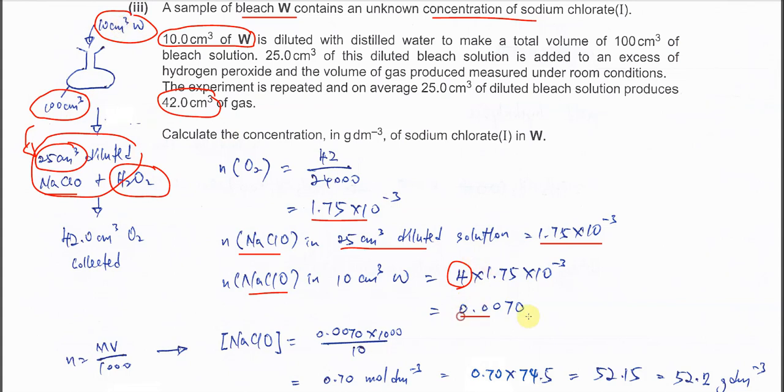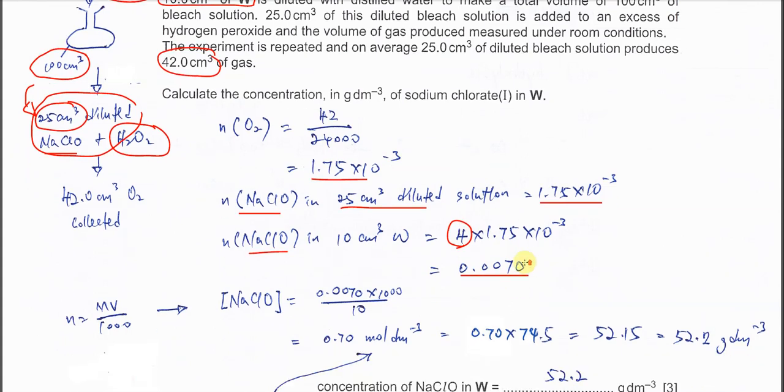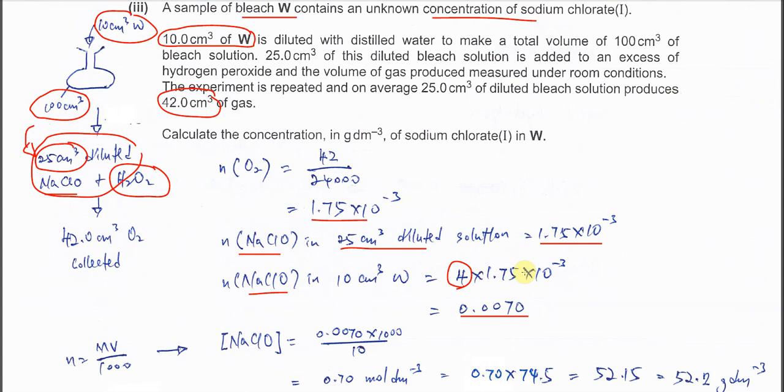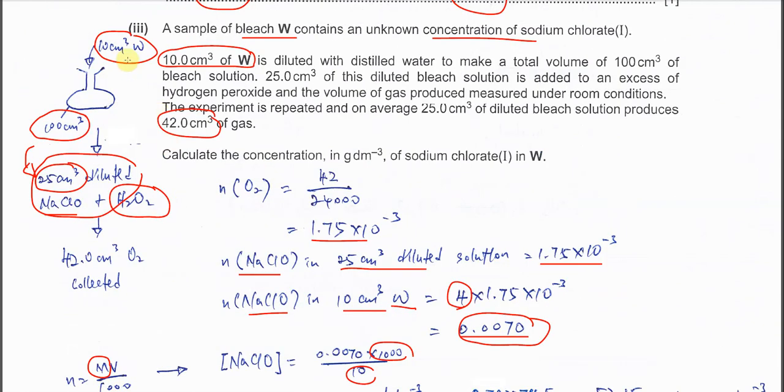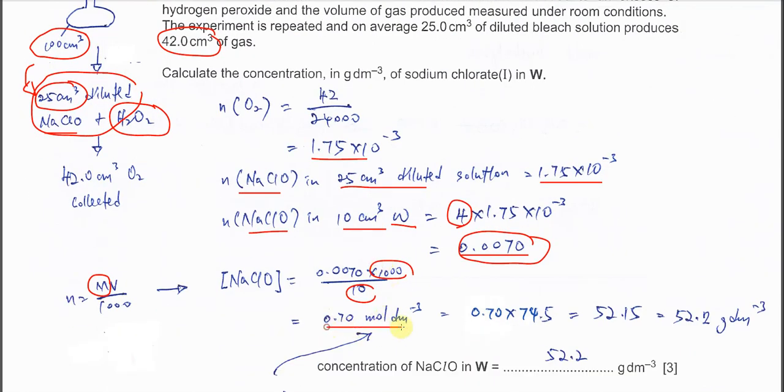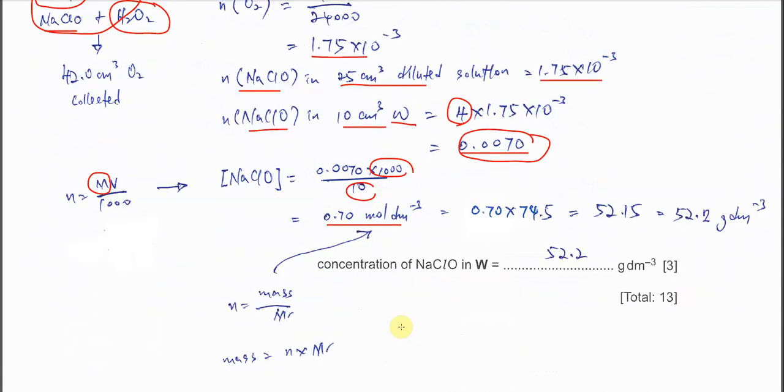You get 0.007. Once you get the number of moles of W in 10 cm³, you can use n = MV/1000. Since we need to find the concentration, rearrange: it will be the moles you obtained, n, times 1000 over 10, the volume used is 10. Then you get 0.7 mol/dm³.